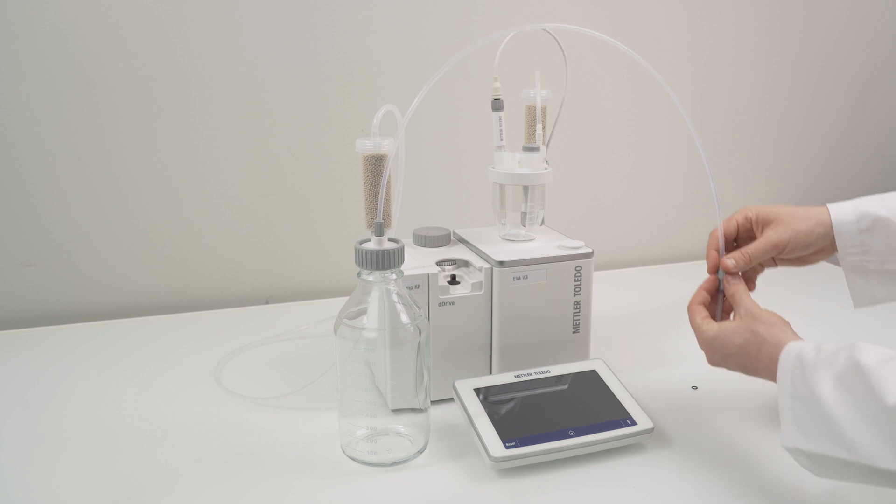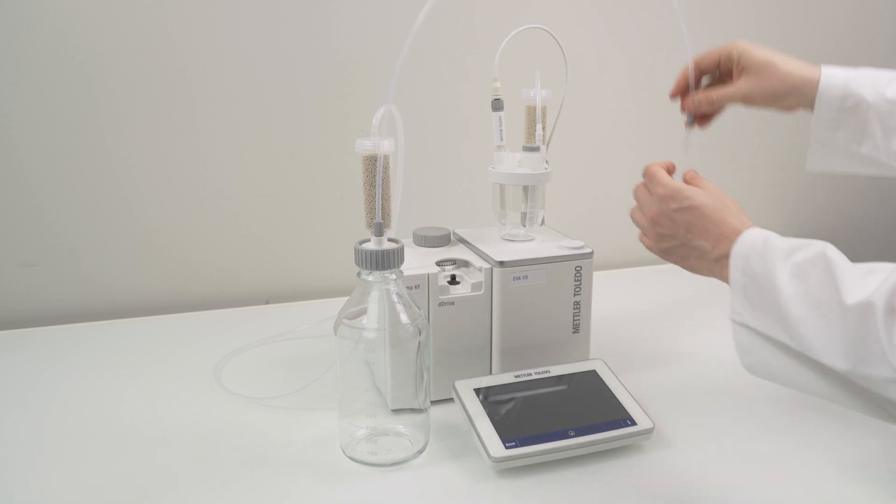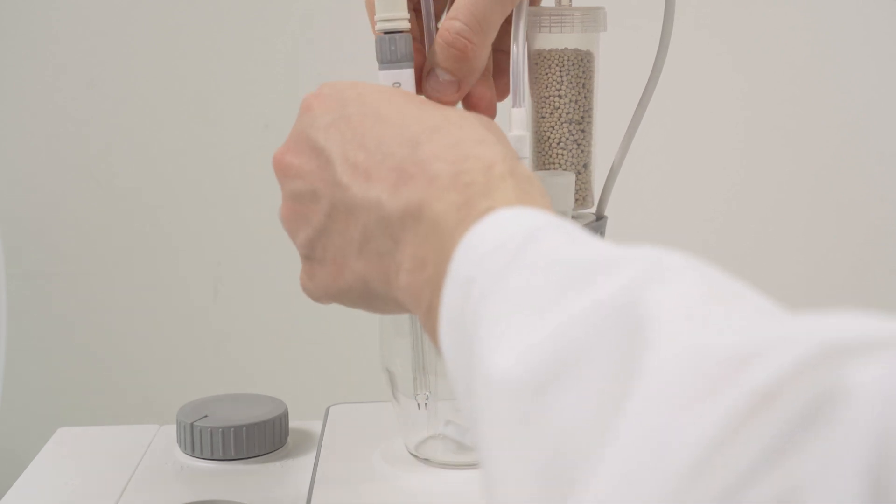Assemble the other end of the solvent tube the same way as you did before. Make sure that the tube is pushed down to the bottom of the glass vessel before fixing it with the nut.